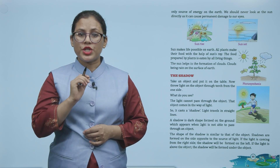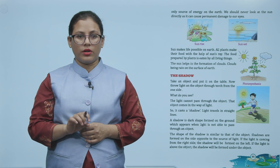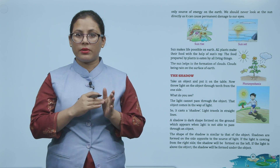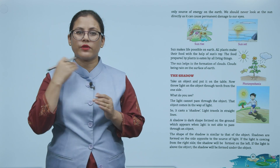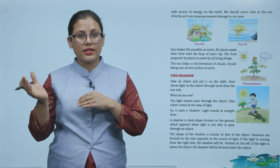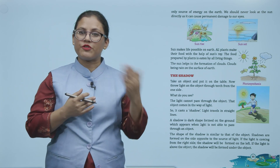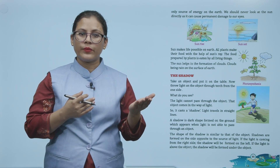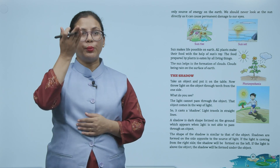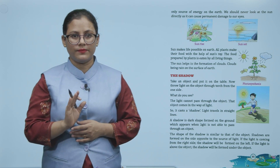Shadow ka shape object ke shape ke barabar hoga. Shadows hamesha opposite side mein banti hai source of light se. Agar light ka source right se hai, toh shadow left mein banegi. Aur light ka source agar upar hai, toh shadow neeche banegi.